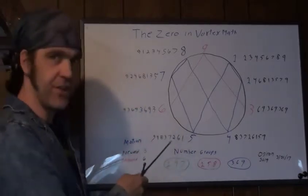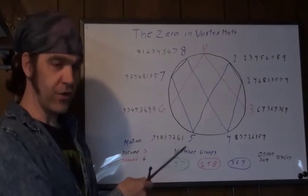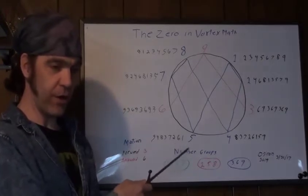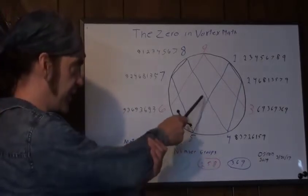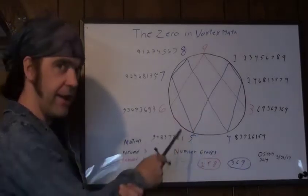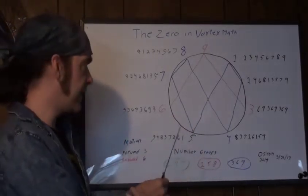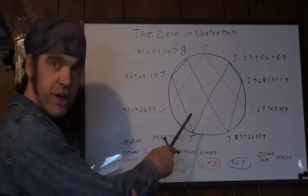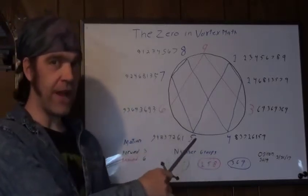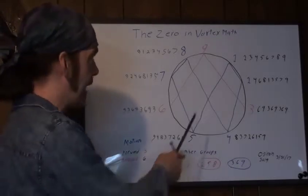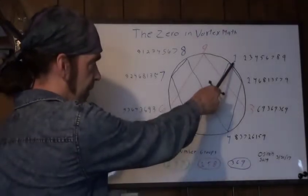Now, when you look at it, you can't see zero. Randy Powell and Marco Rodin say zero is here at this cross point, and that may be true, that may be a zero point as well, I'm not going to deny that.